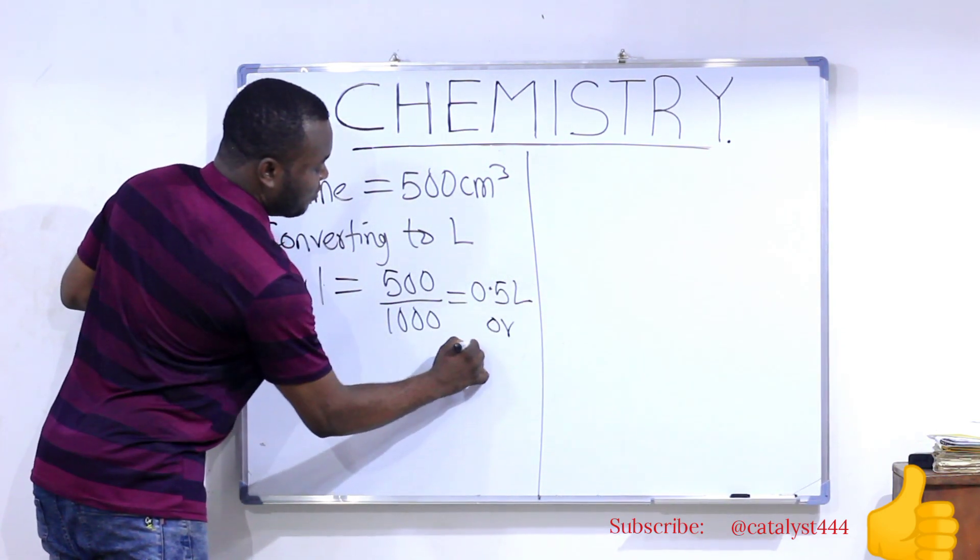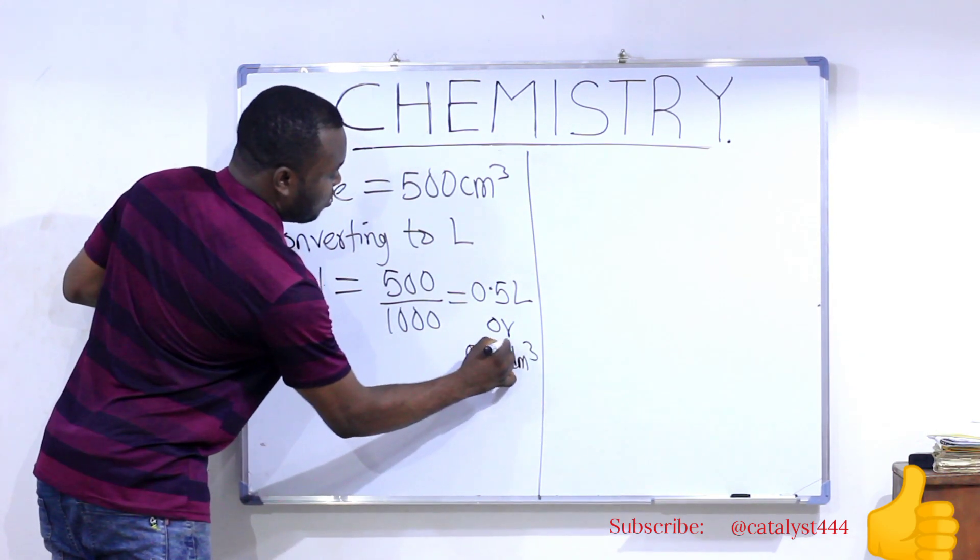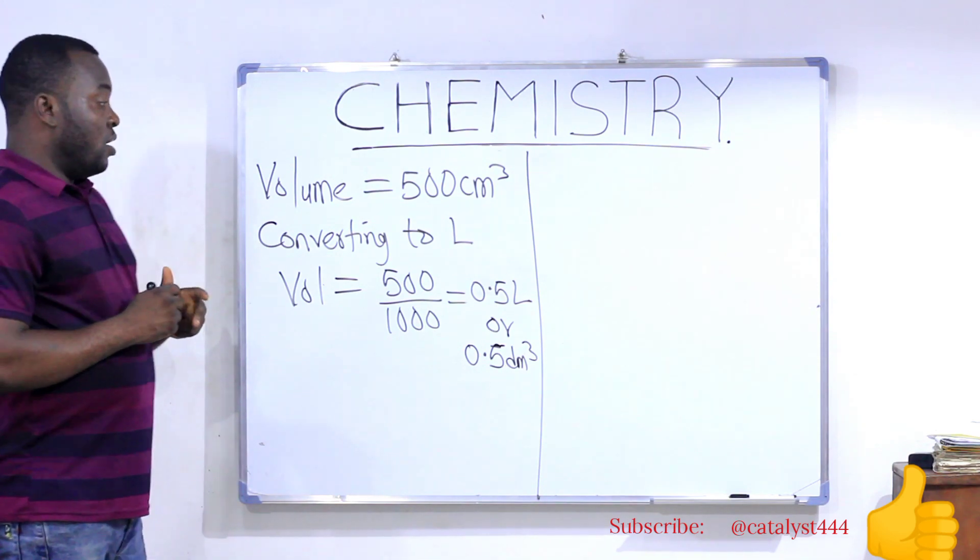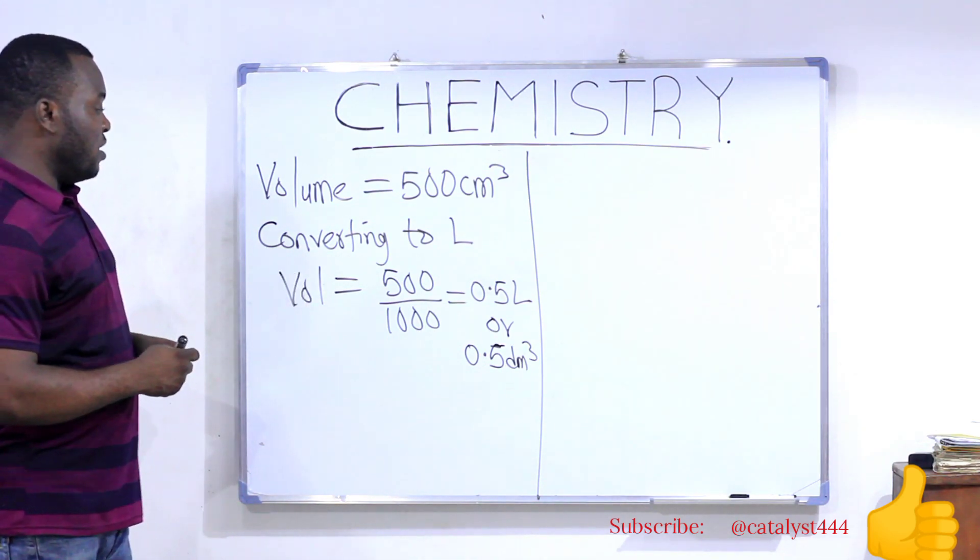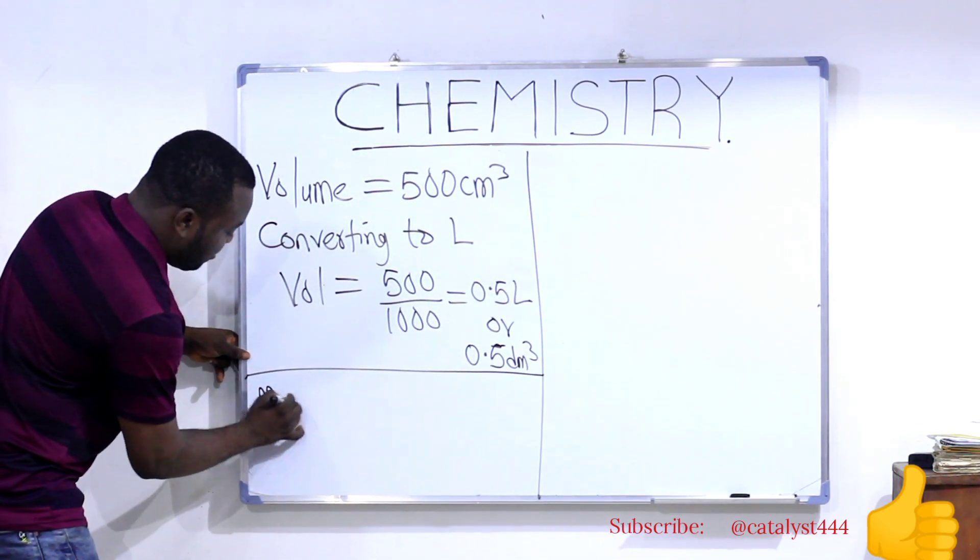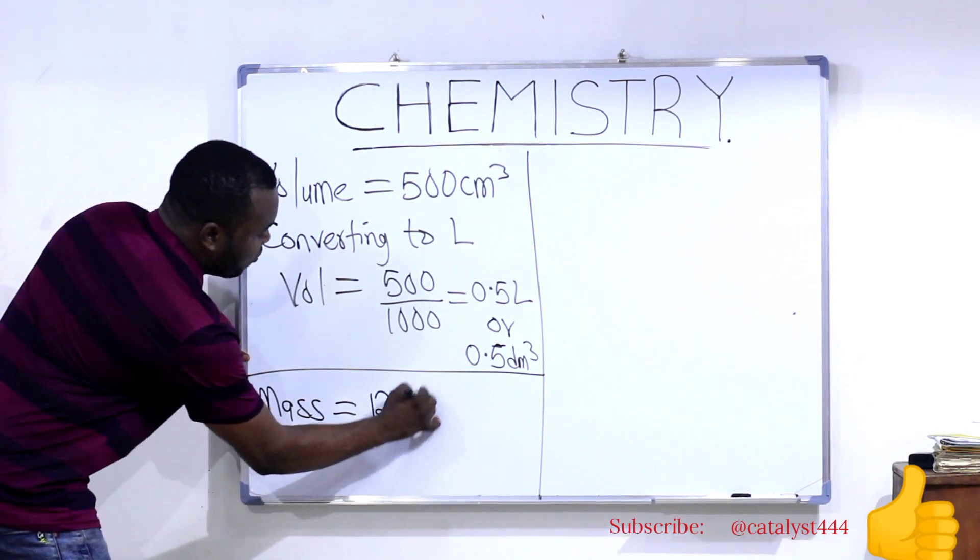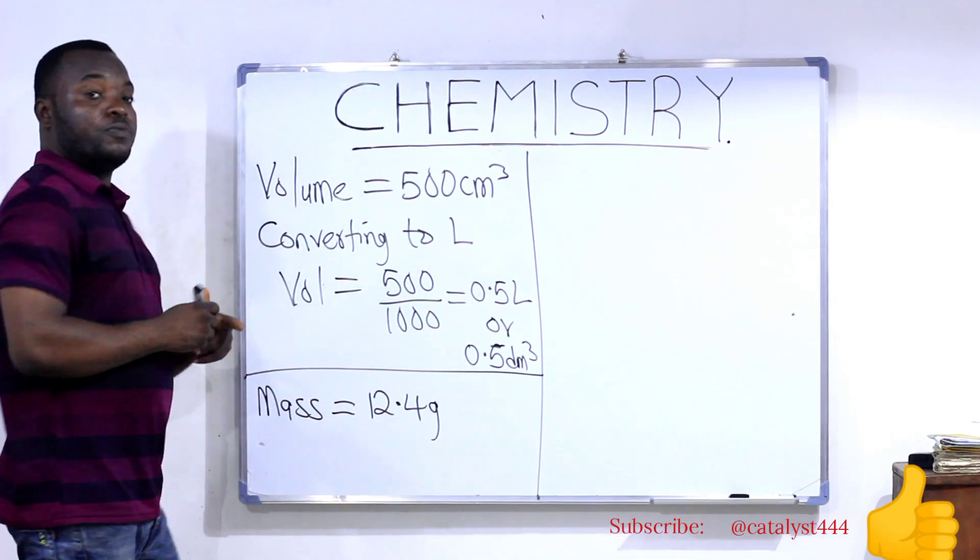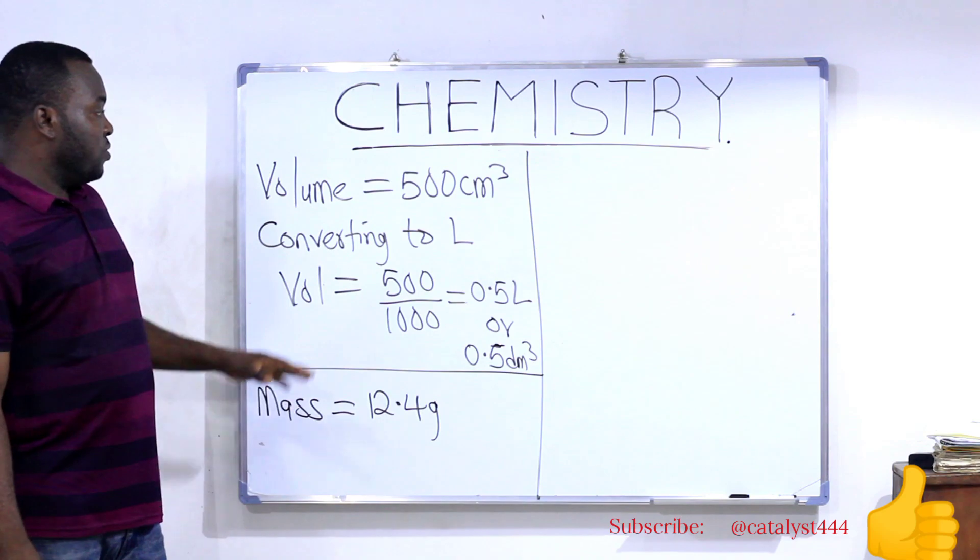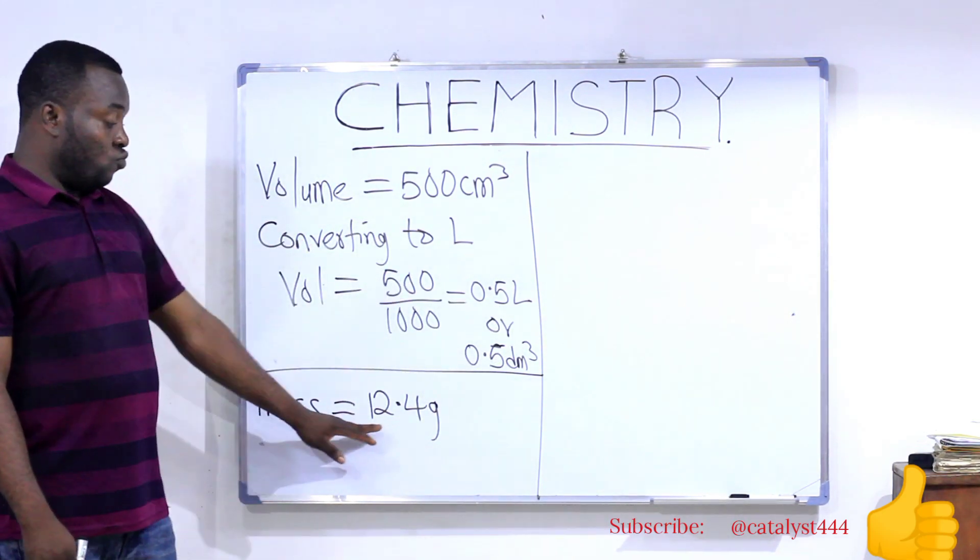Or, you can call it 0.5 dm³. It's the same thing. Now that I have gotten my volume, the next thing I will do is to find out the mass given in the question. The mass given to us in the question is equal to 12.4 grams of the salt. Now you can see the volume is 0.5 liters. The mass is 12.4 grams.